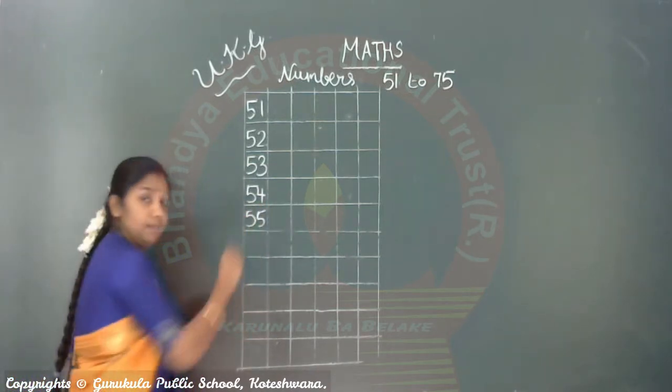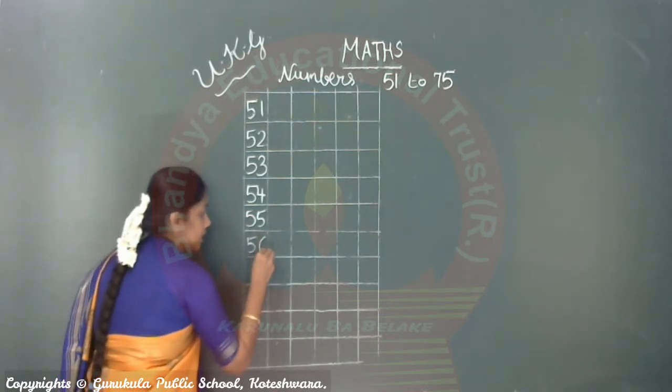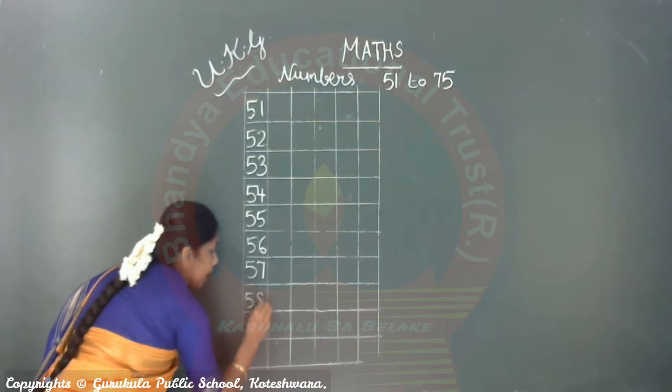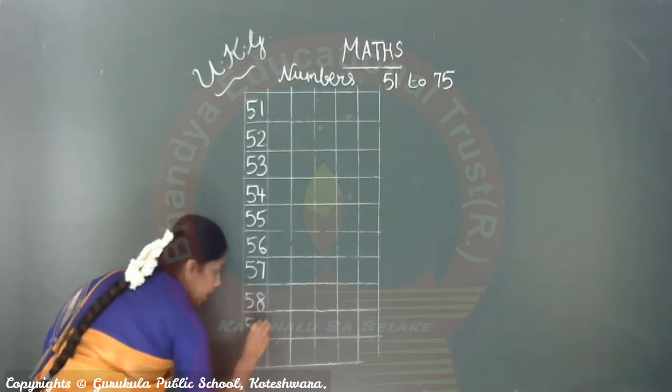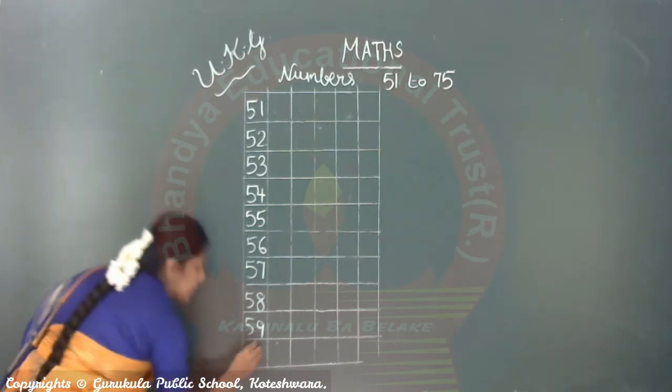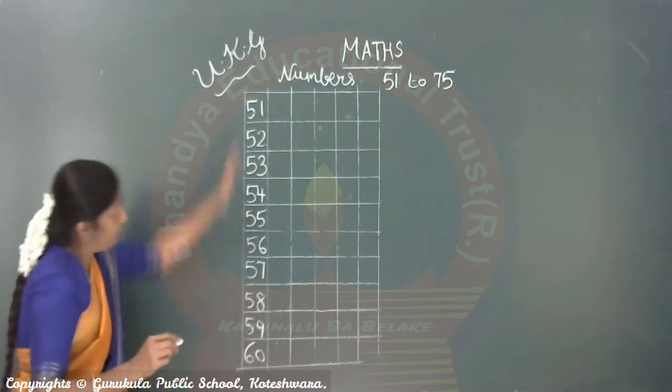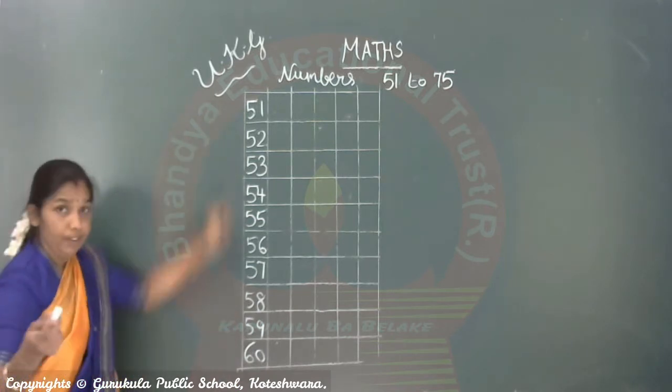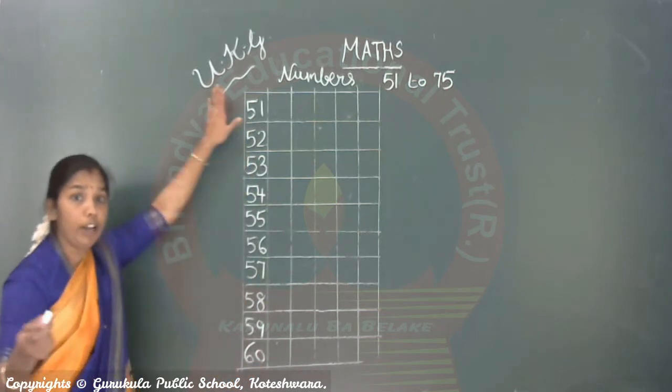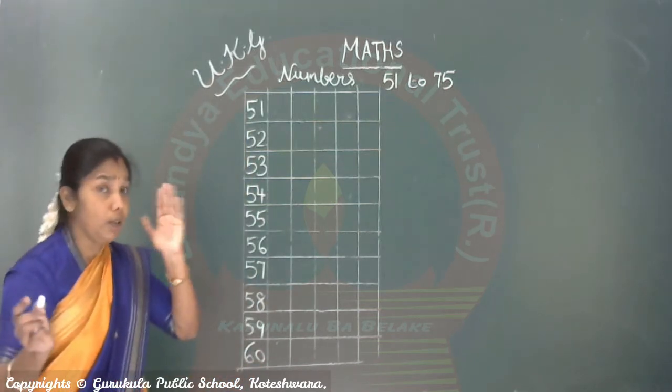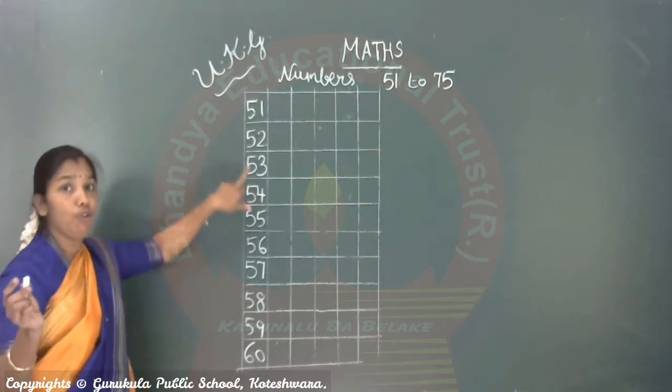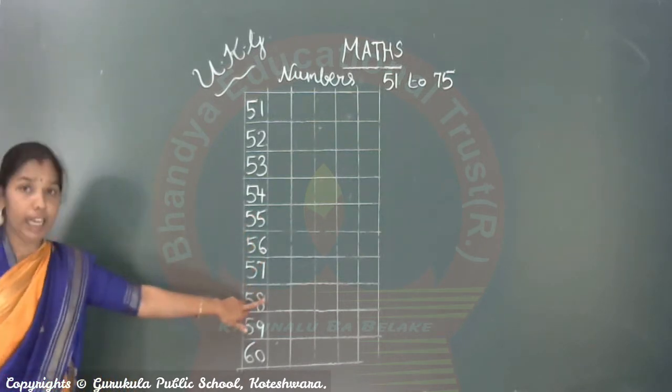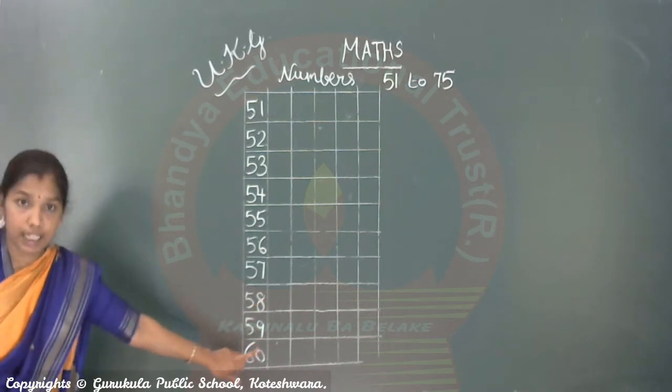55. Then which is the next number? 56, yes. 57. 58, 59, and then comes which number? 60. You have to say, how to say, 51 to 60. Hope you will all remember this in your mind: 51, 52, 53, 54, 55, 56, 57, 58, 59, 60.